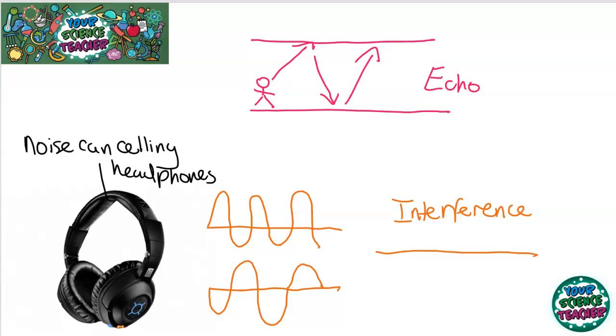You can also use echoes to calculate the speed of the waves using the equation on the last slide, but the speed in a gas of waves is always less than through water or a solid. In fact, the speed of sound in air is considerably less at 330 meters per second.